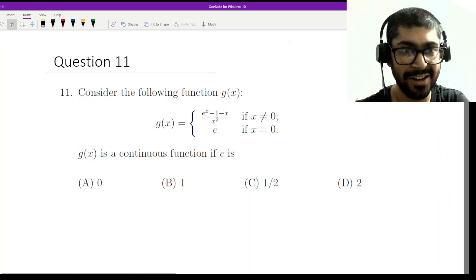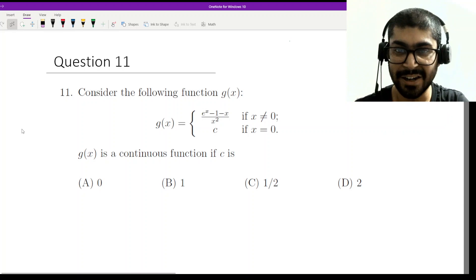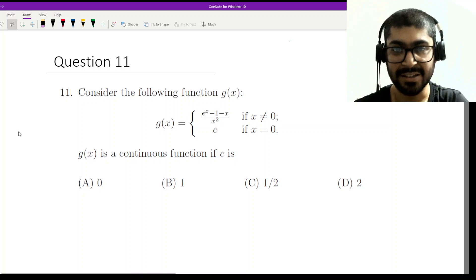Question 11 is surprisingly fairly easy. We just have to calculate the limit at 0, right? Because g(x) is defined such that if x is not equal to 0, we have it as e to the power x minus 1 minus x by x squared.